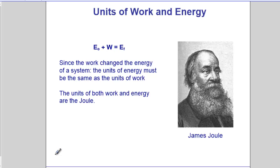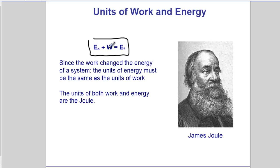Here's a picture of James Joule himself. This is a statement of conservation of energy: when no work is done, the initial energy and final energy are equivalent. Energy is measured in joules, and work is measured in joules. If work is done and it's positive, your final energy goes up. If the work is negative, the energy goes down — just as we saw in the previous slides.